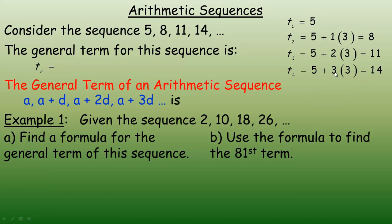The next term has an additional 3, so I have the first term plus 3 threes. 3 threes is 9, plus 5 is 14. Notice that the number of 3s you're adding is always 1 less than the term number — I've added 1 three to get the second term, 2 threes to get the third term. So for the nth term, you've added n minus 1 threes.